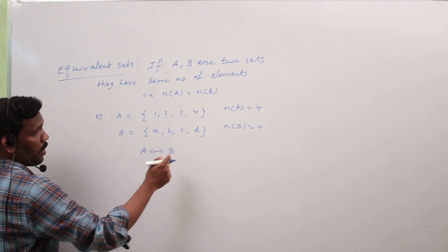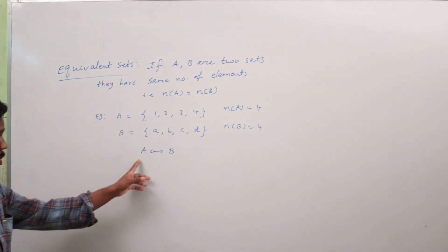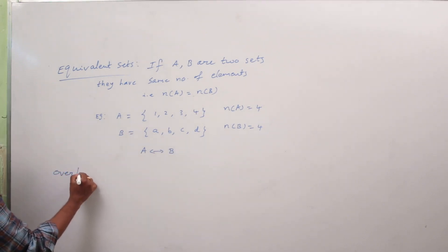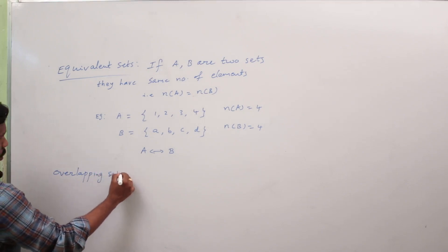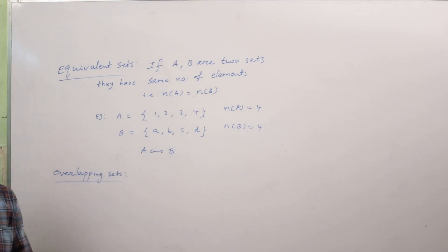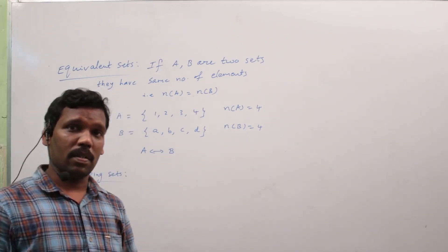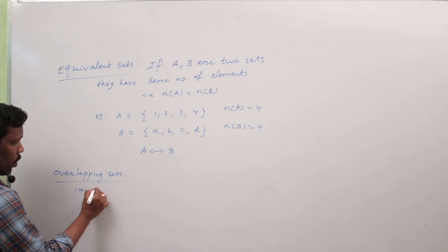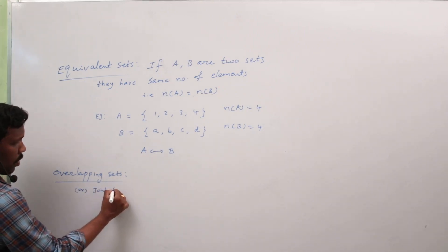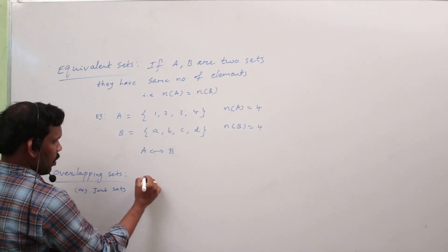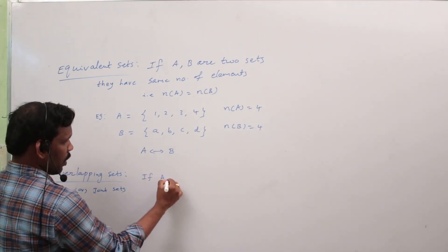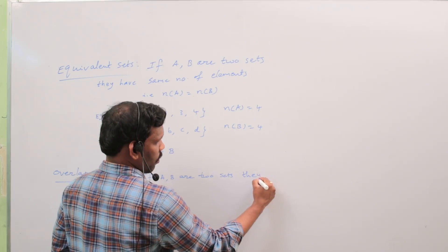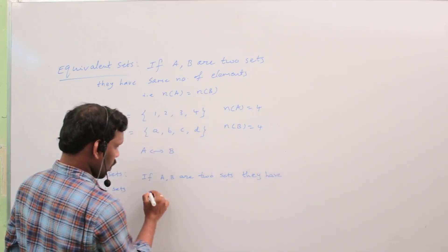Equivalent sets are denoted by A ~ B. Now, overlapping sets: two sets having at least one common element are said to be overlapping sets. Overlapping sets are also called joint sets. If A and B are two sets, they have at least one common element.